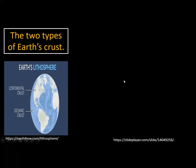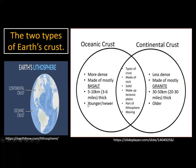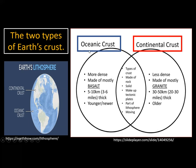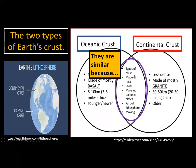There are two types of Earth's crust: continental and oceanic. The oceanic crust is found at the base of the ocean, while the continental crust is the land — the continents. How are these two types of crust similar? They are both crust, both made up of rocks, both solid, they make up the tectonic plates, they are part of the lithosphere, and they are both moving.